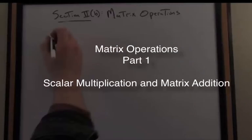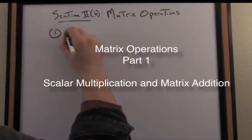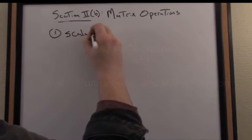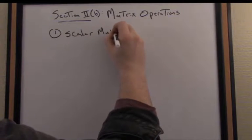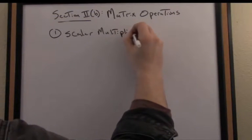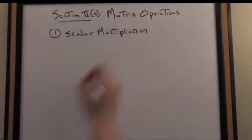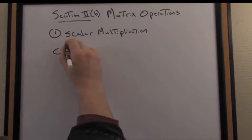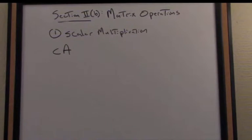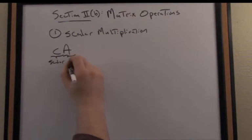The first matrix operation I want to talk about here is known as scalar multiplication. That reminds us of scalar multiplication for vectors; it essentially works the exact same way. I notate scalar multiplication for a matrix through adjacency, so C is my scalar, just a real number, and A is my matrix.